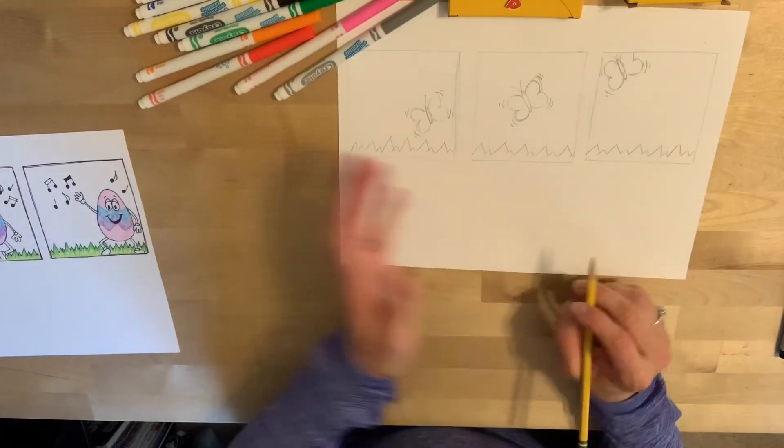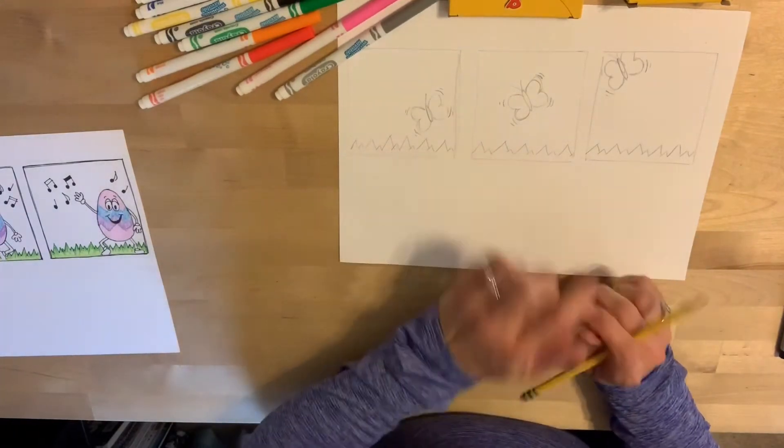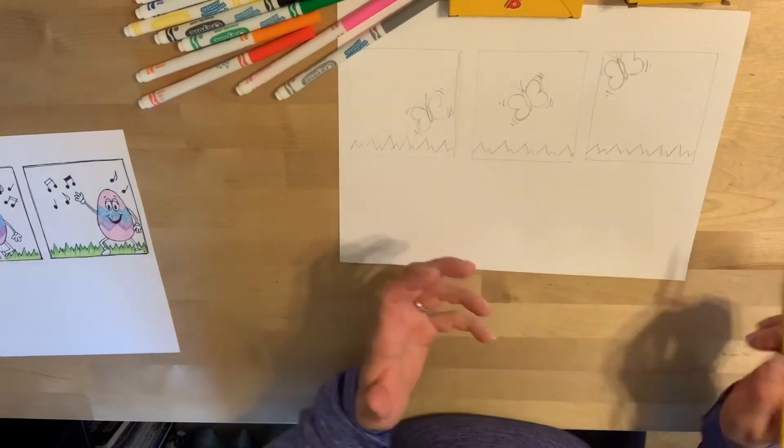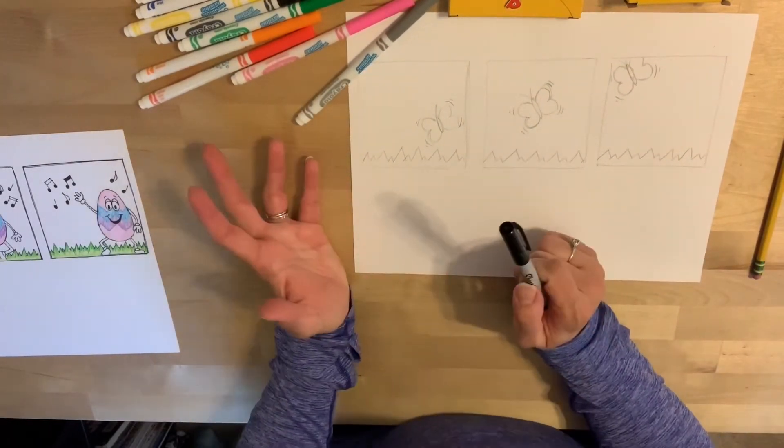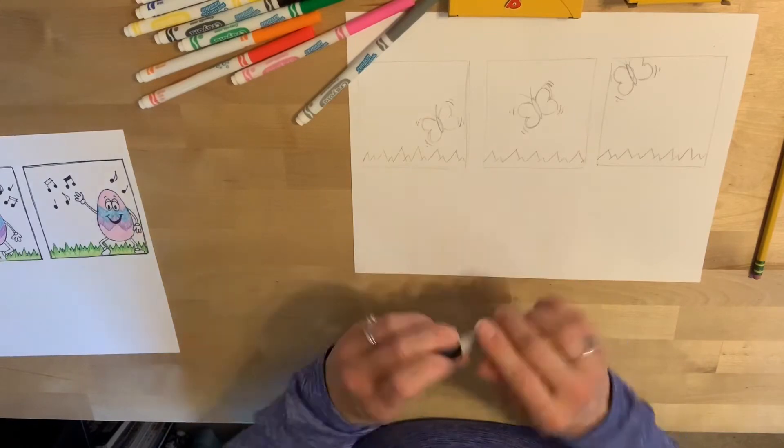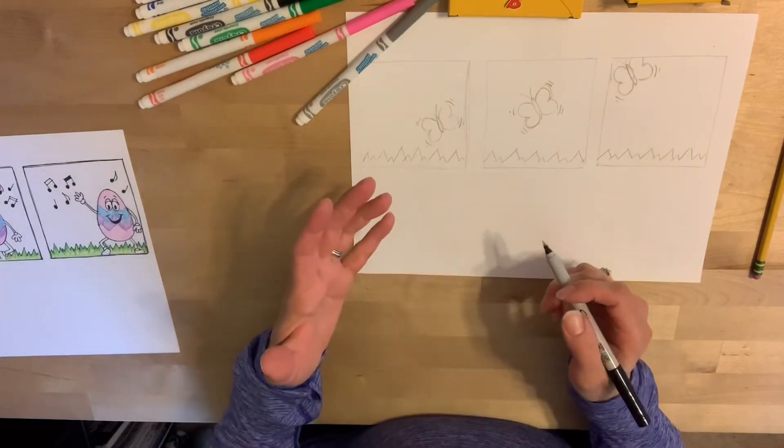Okay, after you have everything drawn in pencil, you have your comic drawn in pencil, you have the something in all three frames. The next step is to take a sharpie or a black pen, something with a thin point. Because comic strips usually are outlined in black. So that's what we want to do.